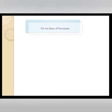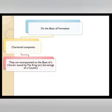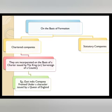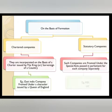On the basis of formation, there are 3 types of companies. 1. Chartered Companies: They are incorporated on the basis of the charter issued by the king or sovereign of the country. Example: East India Company, formed under a charter issued by the Queen of England. 2. Statutory Companies: Such companies are formed under a special act passed in parliament for each company separately. Examples: RBI (Reserve Bank of India), Life Insurance Corporation.